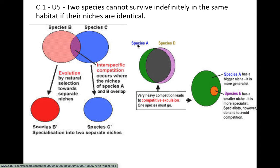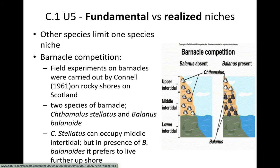In these graphs, species B and C have a little overlap showing interspecific competition and some stress, but also their own distinct zones. Species A and D have heavy overlapping, leading to the competitive exclusion principle — one species will have to go because they share too much of the same space and occupy too much of the same niche. Species A as a generalist has a bigger niche, while specialist species E occupies only a smaller area, avoiding competition.